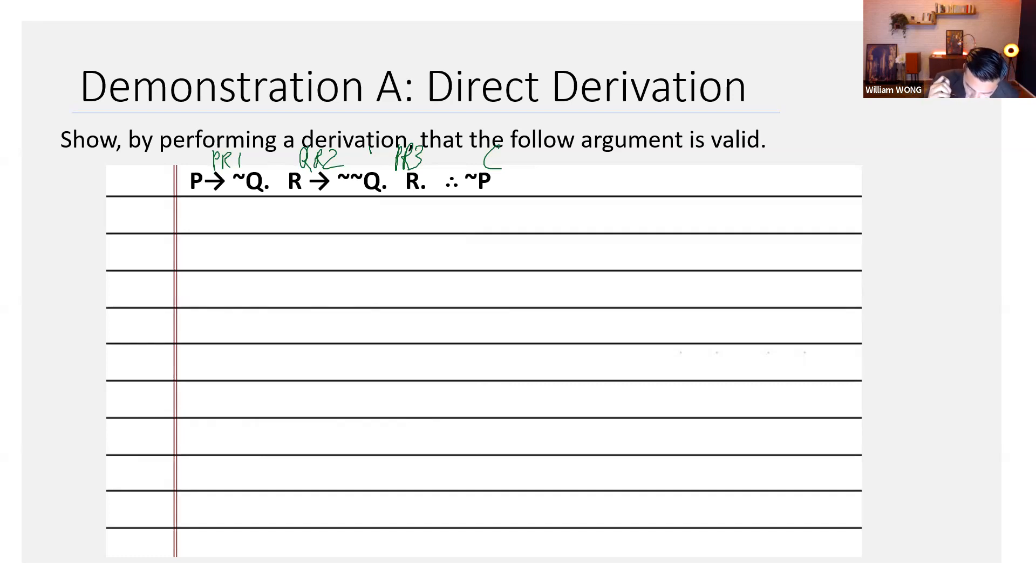Here's what you do. You want to show that the conclusion that is not P follows from the premises, right?